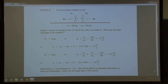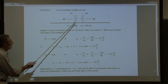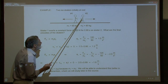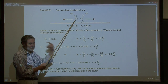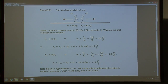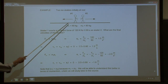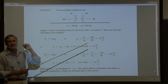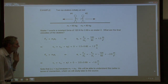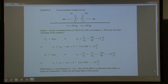We'll call this direction positive. We know this skater is going to be moving this way, and the other one is going to be moving the other way by Newton's Third Law. We know the force exerted on person one is equal and opposite — 120 Newtons in the opposite direction for the same amount of time. That's what Newton's Third Law tells us.